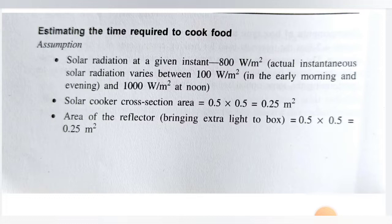For this case study we have to consider some assumptions. Solar radiation at a given instant: we are considering 800 watts per meter square. The actual instantaneous solar radiation varies between 100 W/m² in early morning and evening, and 1000 W/m² at noon. So we are taking the average solar radiation of 800 W/m².